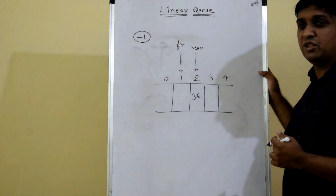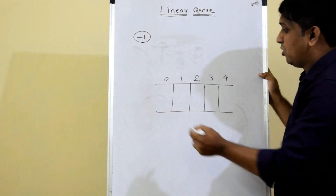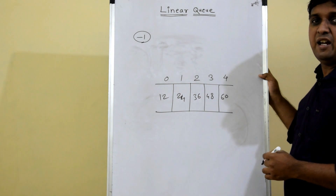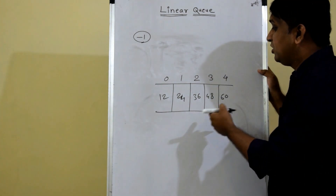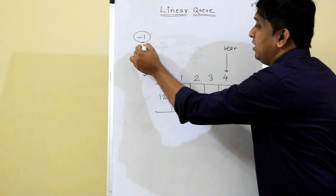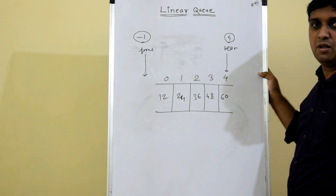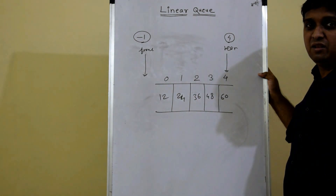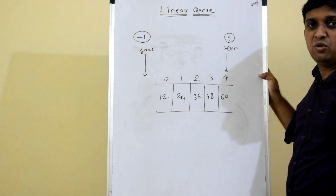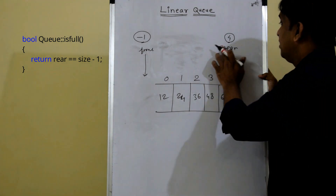For isFull: when the queue is full, say elements 12, 24, 36, 48, 60 are filled, rear will be pointing to index 4 and front will be minus 1 since no element has been removed. So in isFull, we check if rear equals size minus one — when that condition is true, the queue is full.